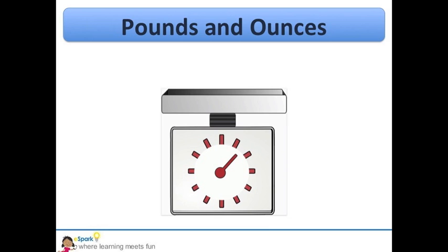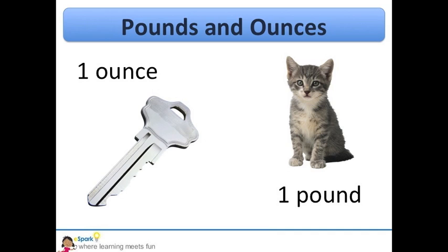Now we are going to look at pounds and ounces. We use pounds and ounces to measure how much something weighs. A key weighs about one ounce. A kitten weighs about one pound. Do you know how much you weigh?